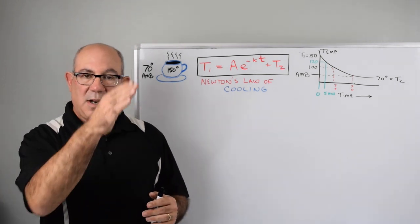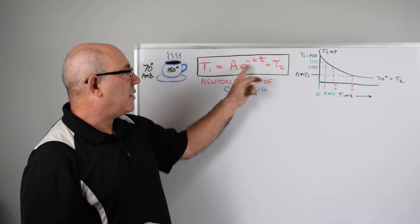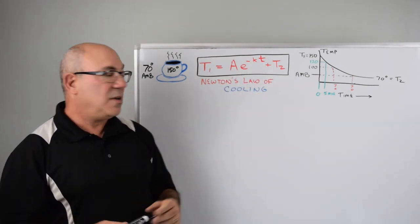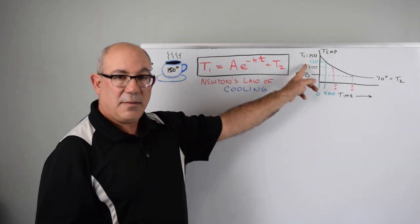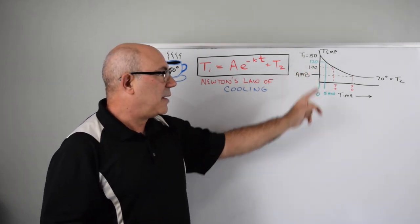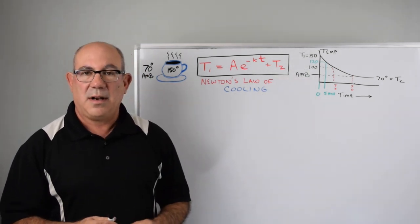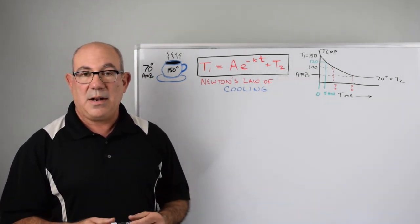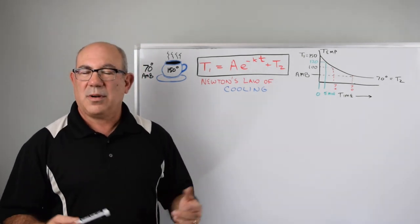We're going to have to figure out both of these constants, and once we do, then we can predict when will the temperature be a hundred. Then when will the temperature come down to about ambient where you may not want to drink the coffee anymore, or you may want to heat it up. How much time do you have before you're going to need to do that?